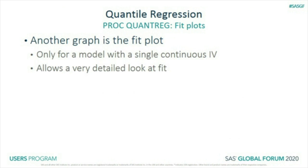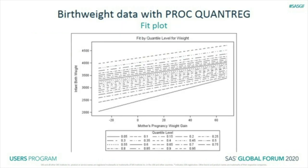There's another graph called the fit plot — it's wonderful but you can only do it for a single continuous independent variable. Each line is a different quantile, from 0.05 at the bottom to 0.95 at the top. For women who gained much less weight than average, 5% had babies under 2,000 grams, and about 15% had babies under 2,500 grams. We can also see the lines are not parallel — the gap between the lowest and highest quantile is bigger at low levels of weight gain than at high.